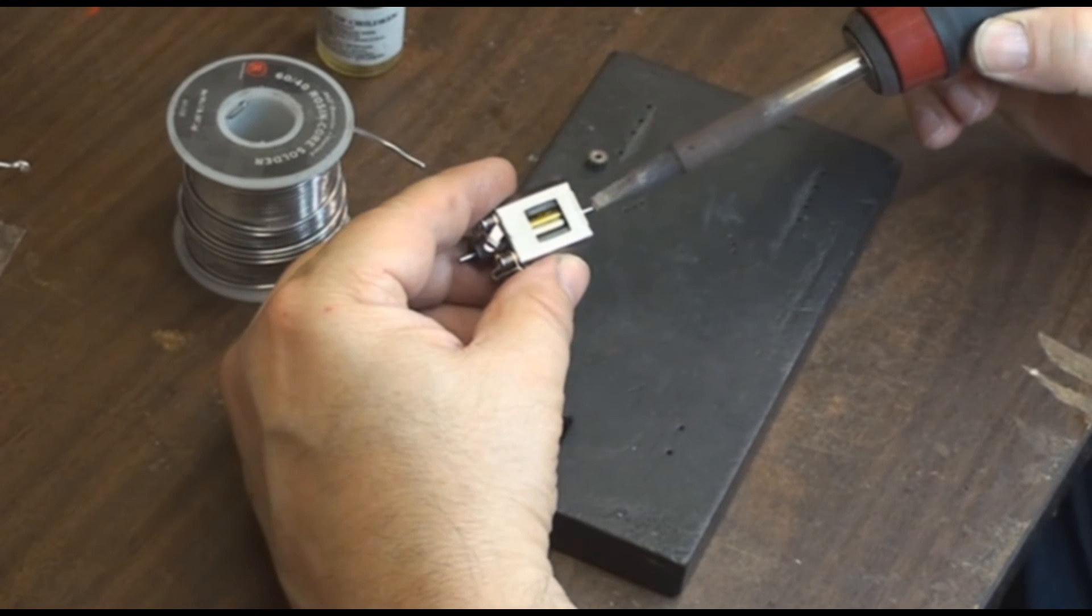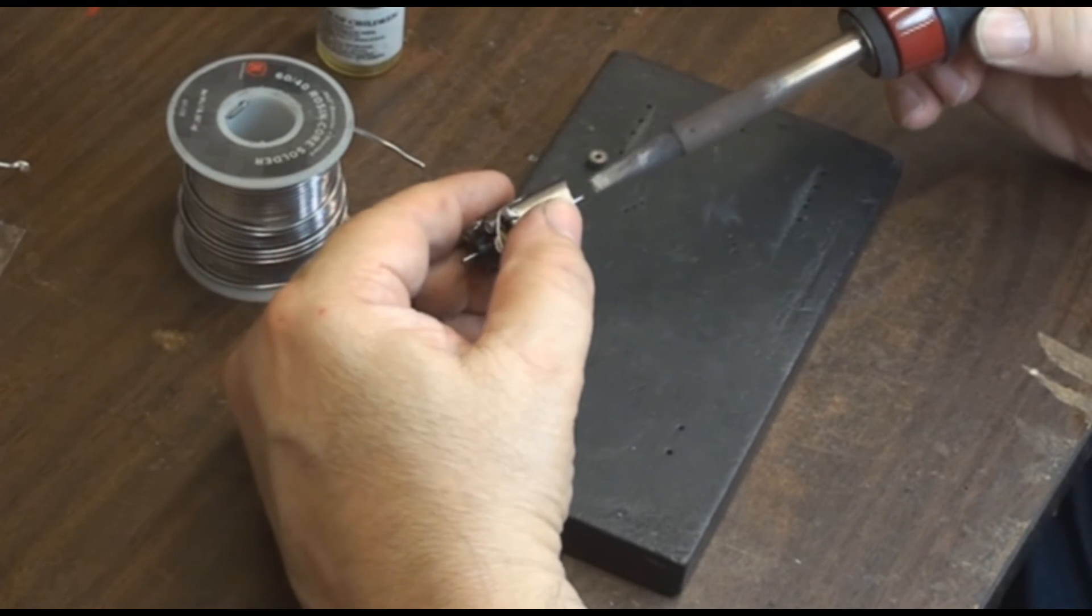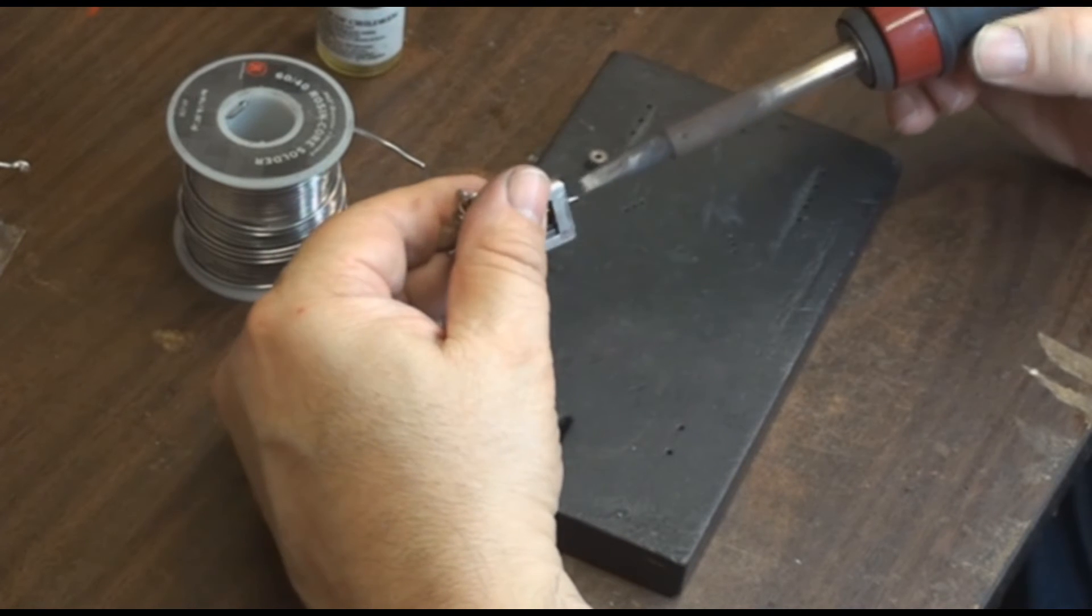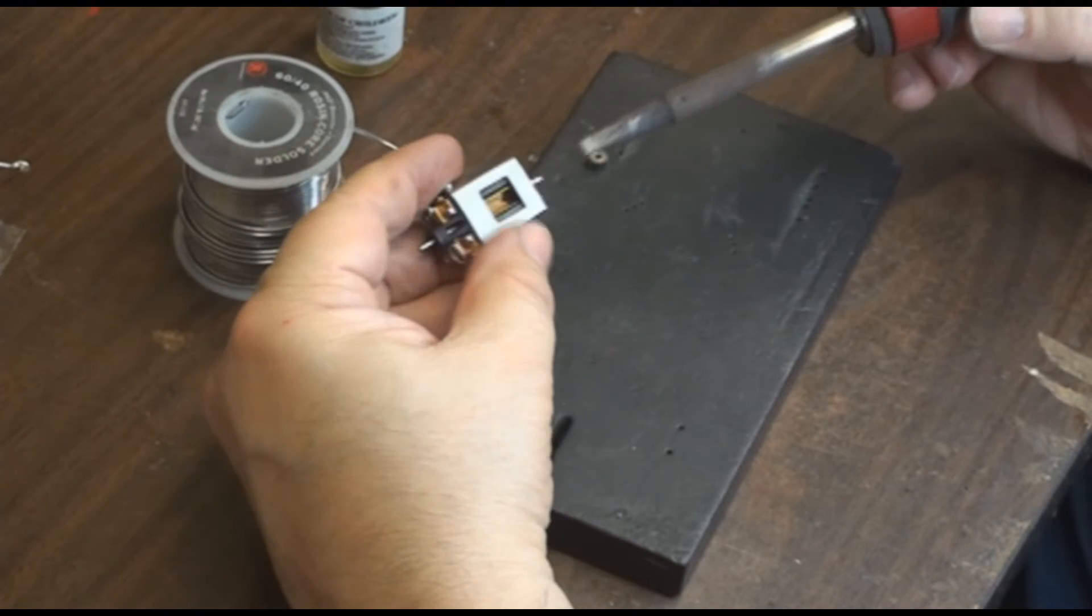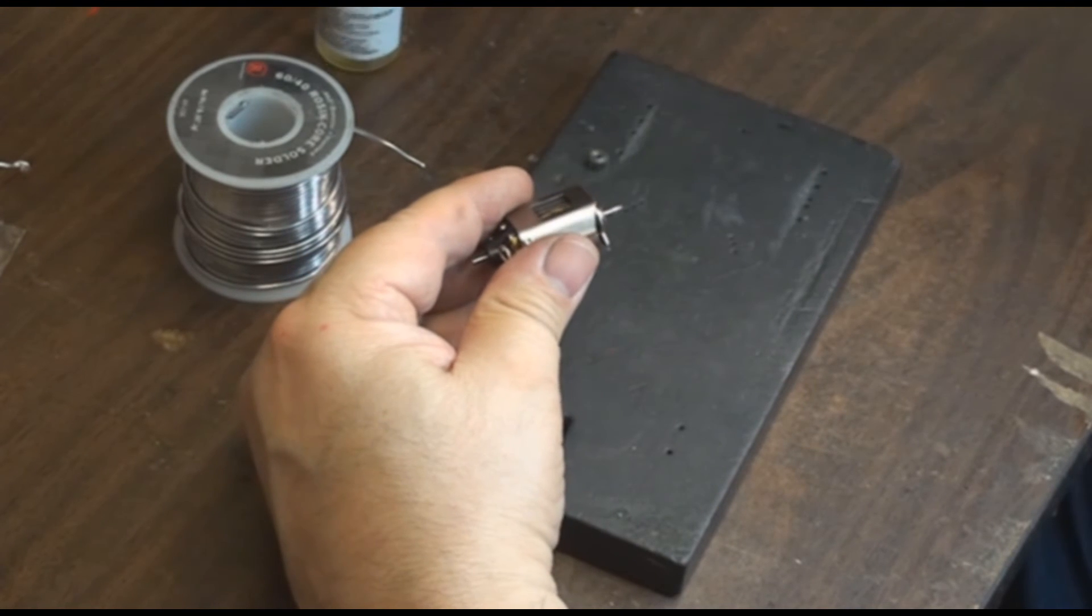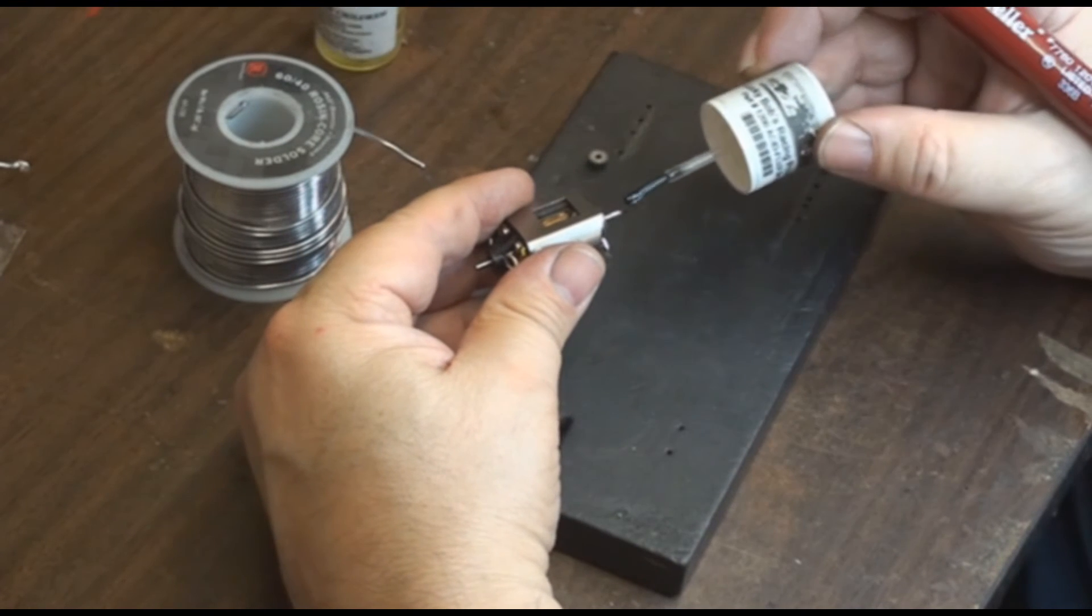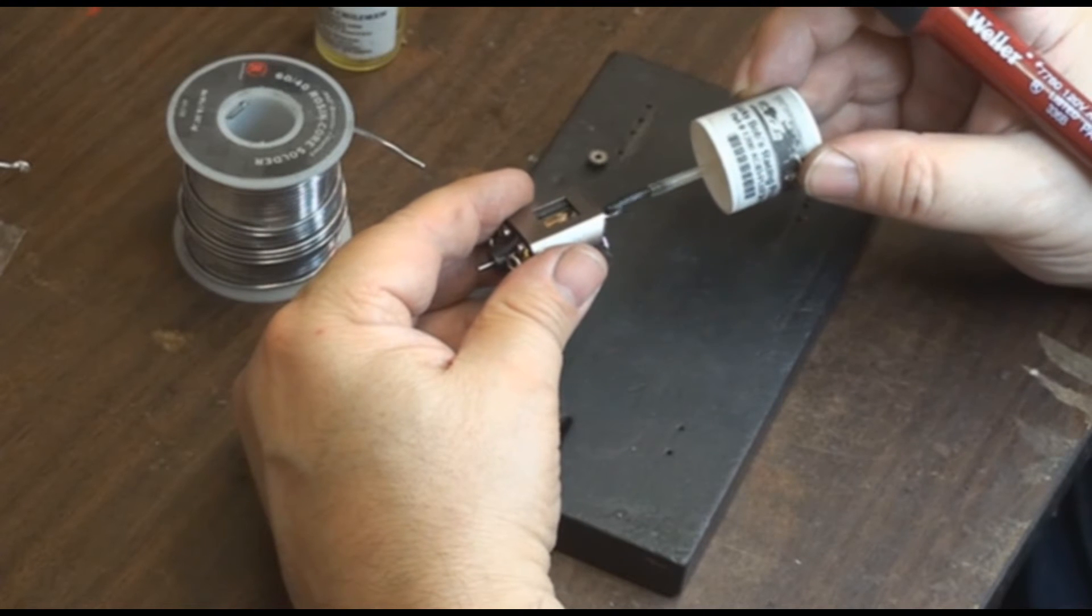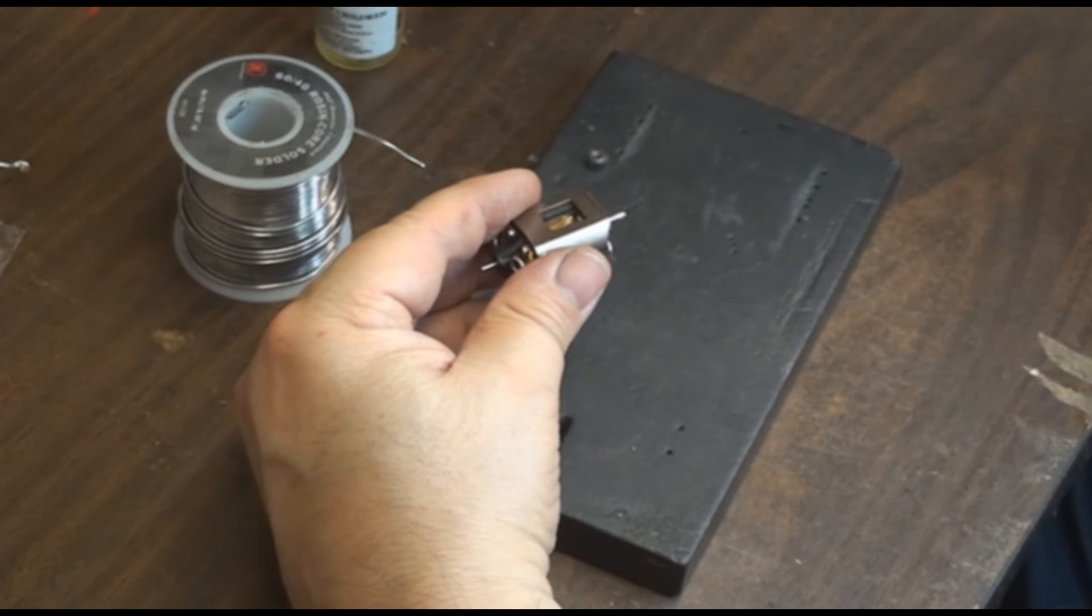Grab a little solder, start tinning the shaft. Now where it's not tinning, just grab some more acid flux. You can see that shaft's pretty hot.